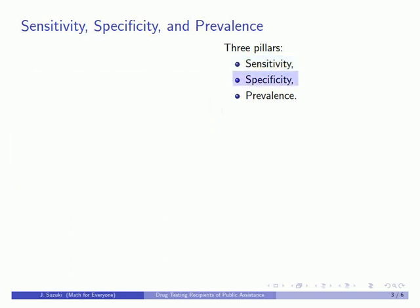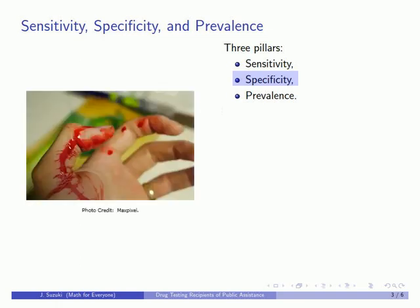Specificity is how often the test detects the absence of a condition. For example, to determine if someone is alive, you could cut them and see if they bleed. However, since it's possible for a dead person to bleed, this test is not very specific.